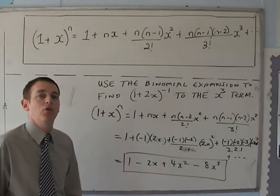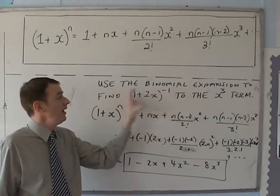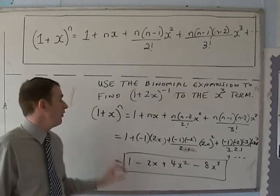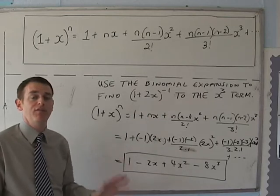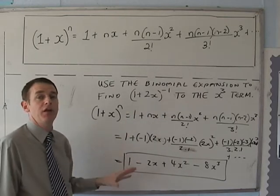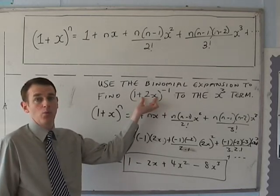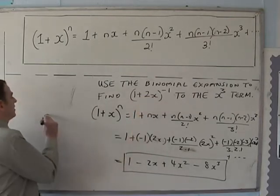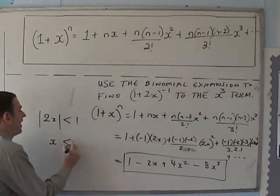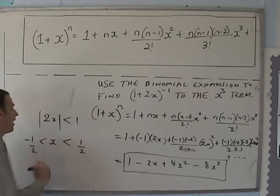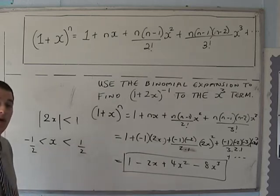Now, for what range is this actually valid? With a positive integer power, any value of x will work. But with a negative or fractional power, the modulus of whatever is inside the bracket must be less than 1. Here we have 2x, so the modulus of 2x must be less than 1, which is the same as saying x is less than one half or greater than minus one half. This expansion only works if x is between those two values.